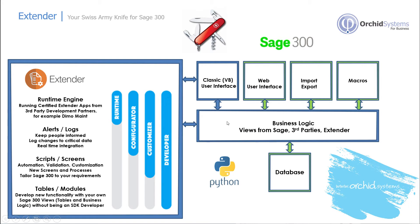Through scripts — using the programming language Python — you can create automation, validation, and customization, and can create new screens, processes, and workflows, all focused on tailoring Sage 300 to your exact requirements. In addition, entire modules can be created with underlying tables or views. If you need additional data within Sage 300, you can create your own views within Sage which will form part of the Sage 300 database and will dump and load.